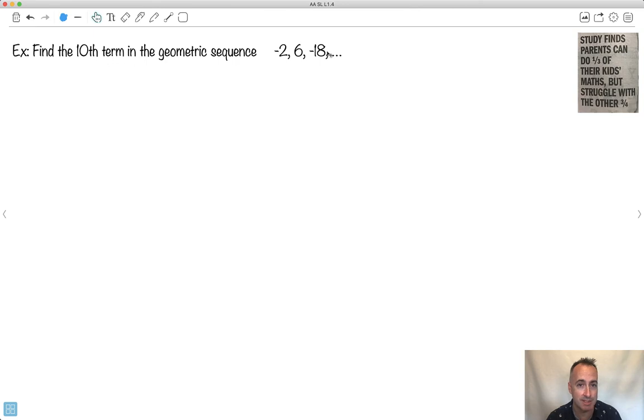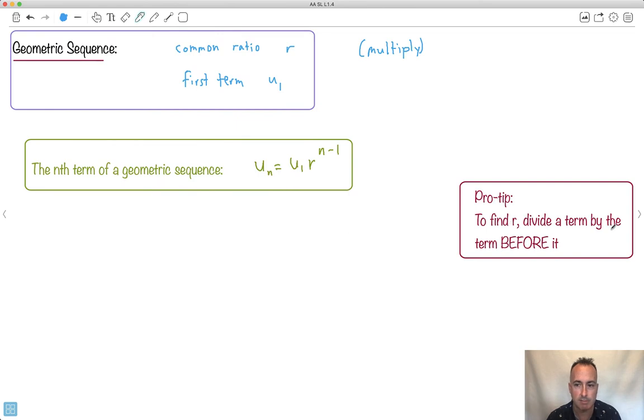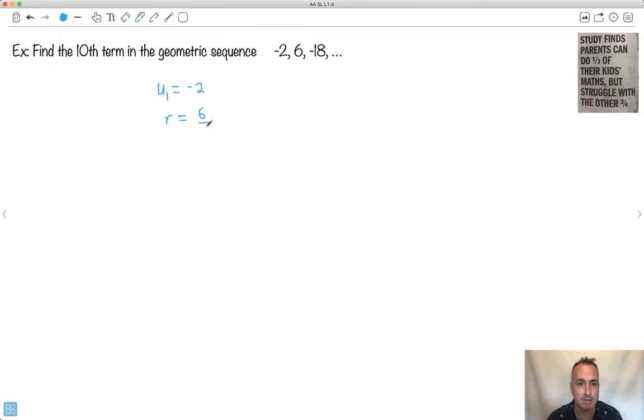So we want the 10th term in this one. Now do you notice what's happening here? It looks a little bit crazy but we're told it's geometric. And if we're told it's geometric that means we know the first term. The first term is just -2. That was easy. Well, we got to find R. How do we find R? Remember that pro tip - take any term, divide it by the term before it. So I'll take my 6 and divide it by -2. 6 over 2 is 3 but this is a negative so it's -3. Let's see if it works for -18 over 6. And it still gives me, 18 divided by 6 is 3 and it's a negative here. So yep, I know that R equals -3.